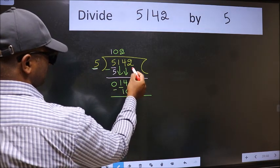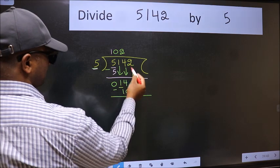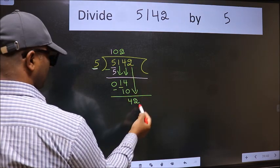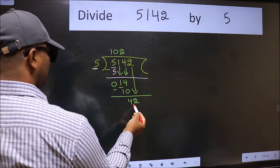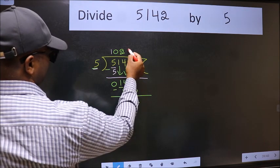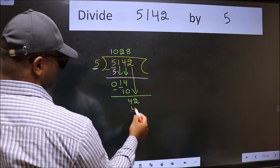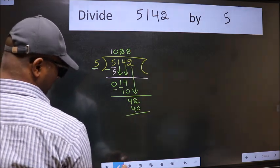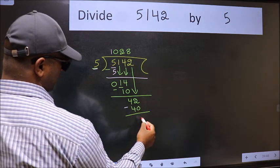After this, bring down the beside number. So 2 down. A number close to 42 in the 5 table is 5 times 8 is 40. Now we subtract. We get 2.